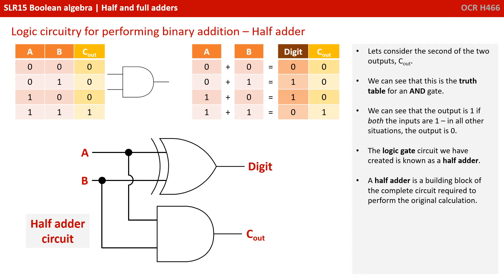The logic gate circuit we have created is known as a half-adder circuit. A half-adder is a building block of the complete circuit required to perform the original calculation that we want to solve.